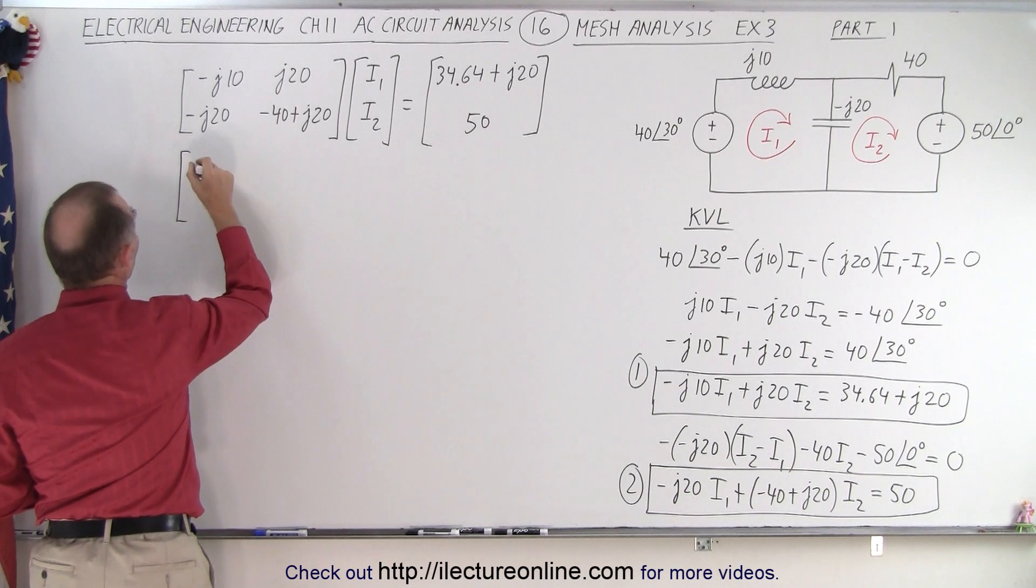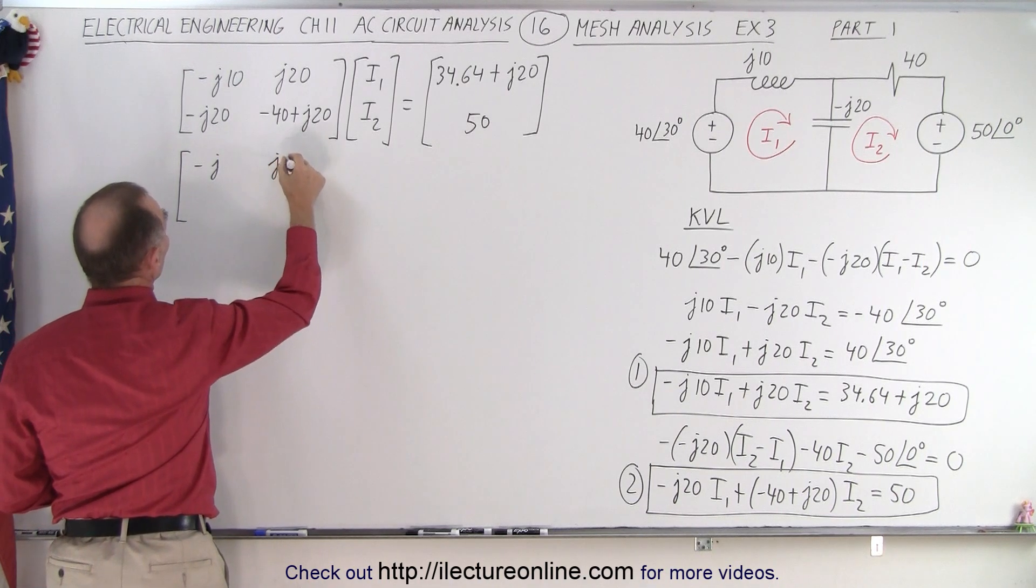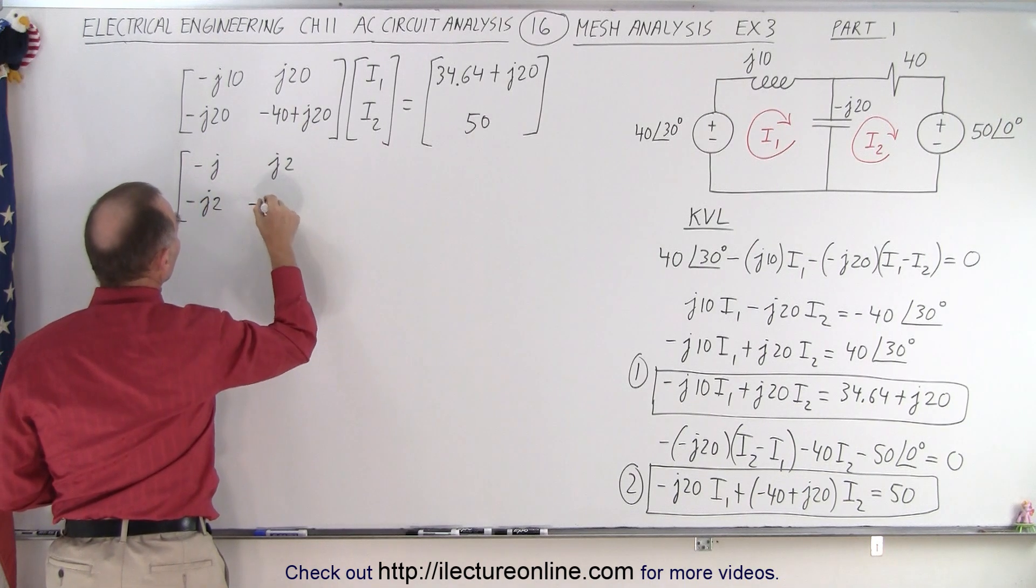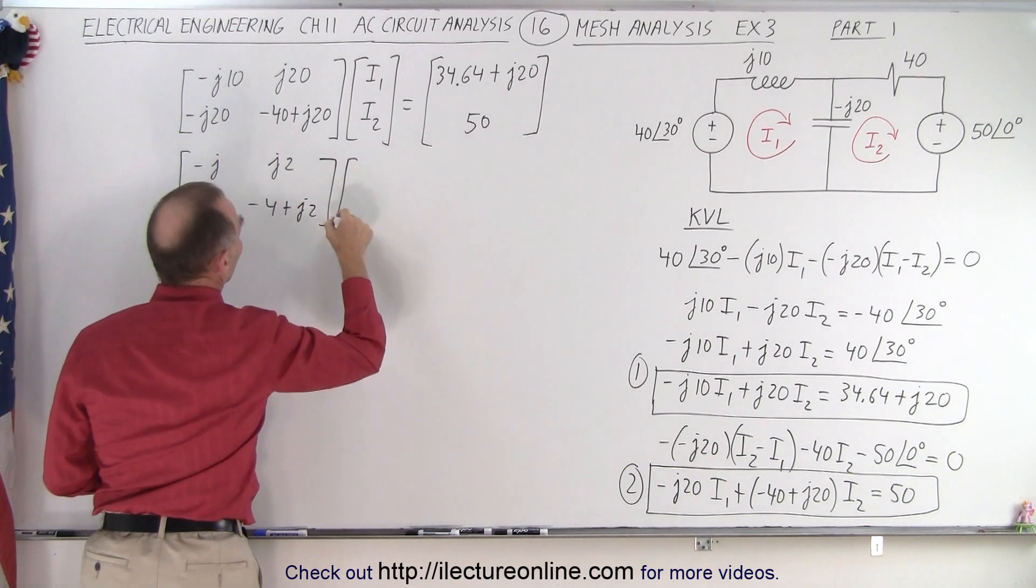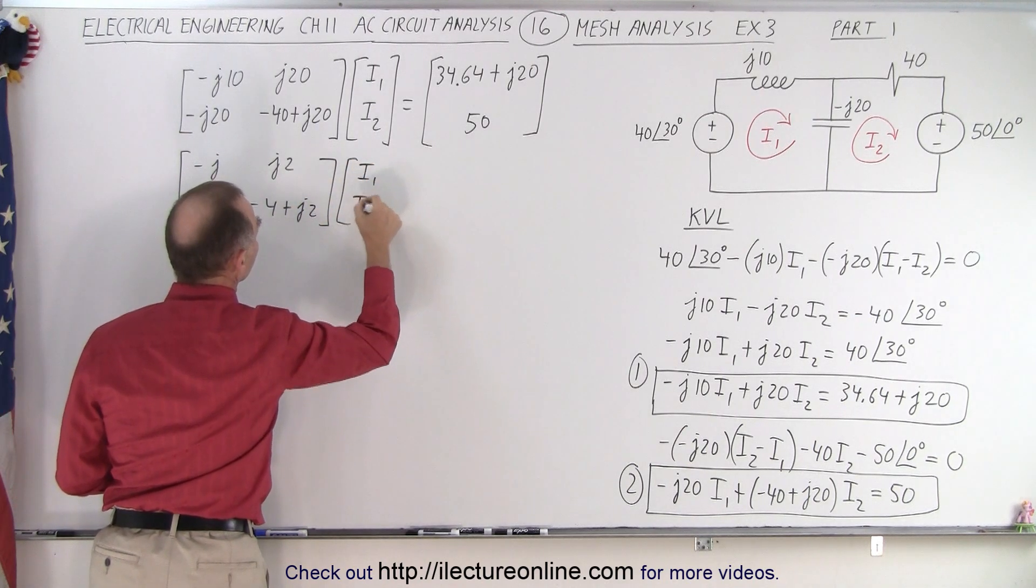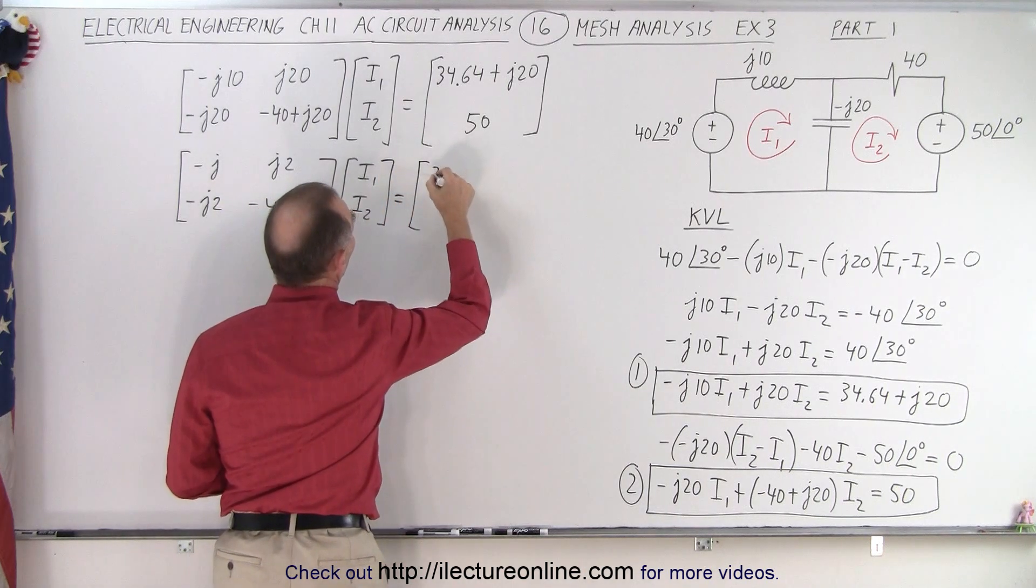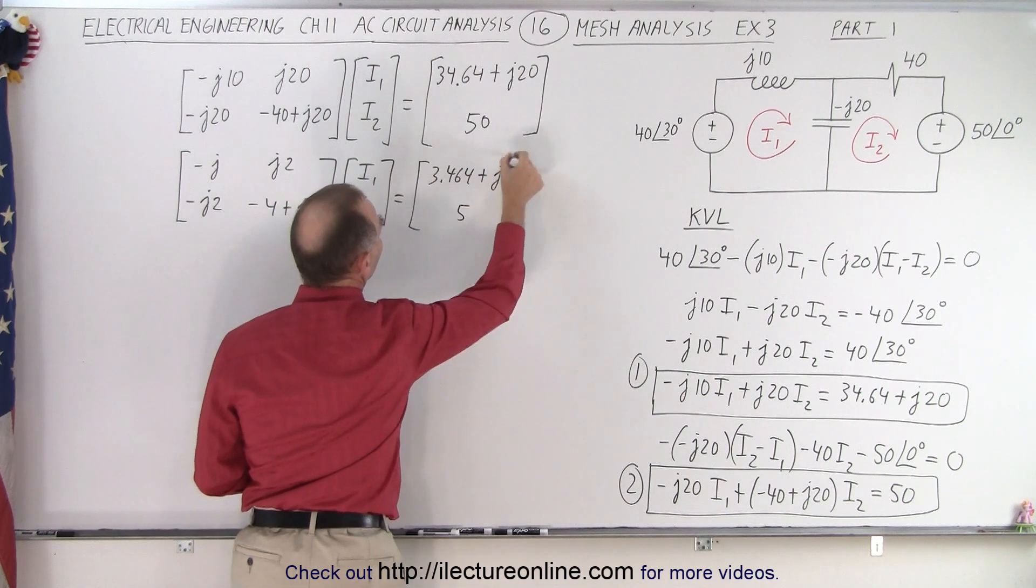So this becomes a minus J, minus 1J. This becomes a J2. This becomes a minus J2. And this becomes a minus 4 plus J2. Times I1 and I2. And that gives me, on the right side, a 3.464 plus J2 and a plus 5.